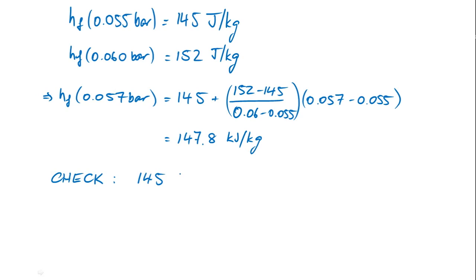When we check that, we can see that the value we've calculated sits between the two tabulated values, and that's as it should be. If you get a value that sits outside either of those two values, then obviously you've made some kind of mistake. That makes sense.